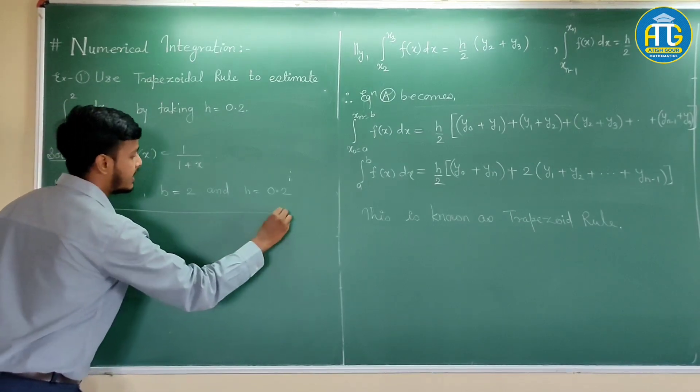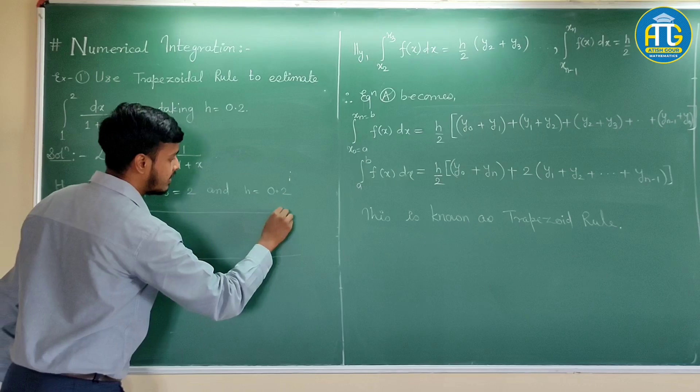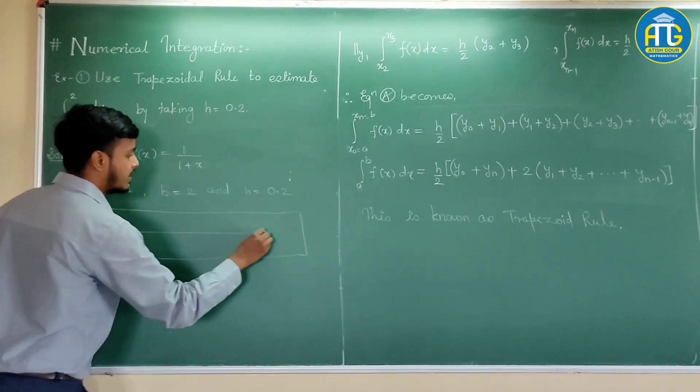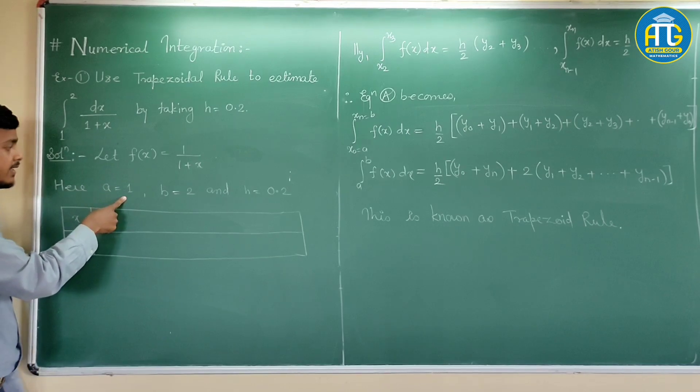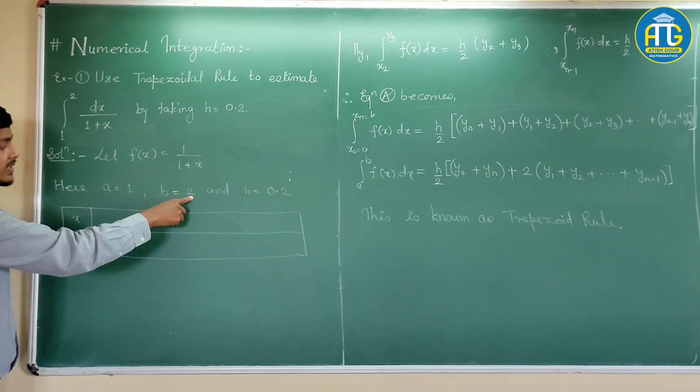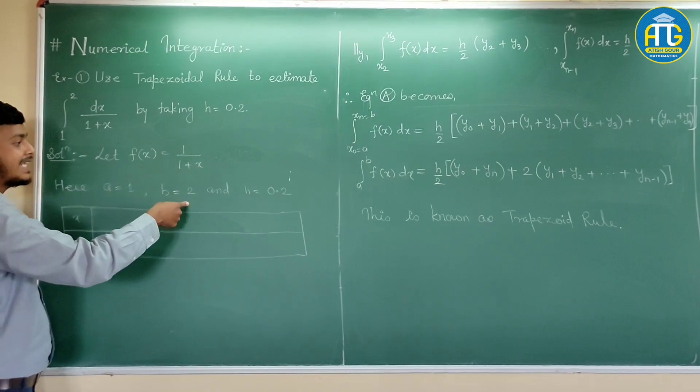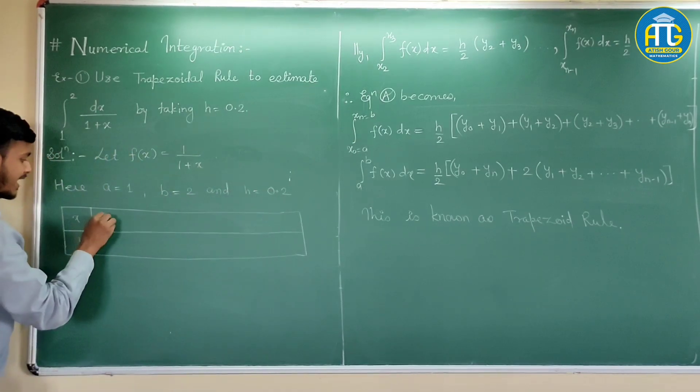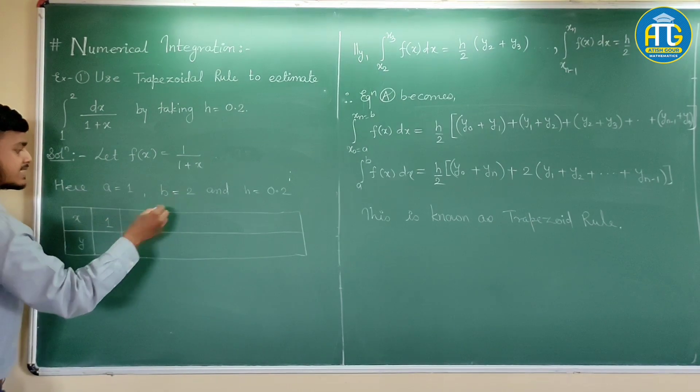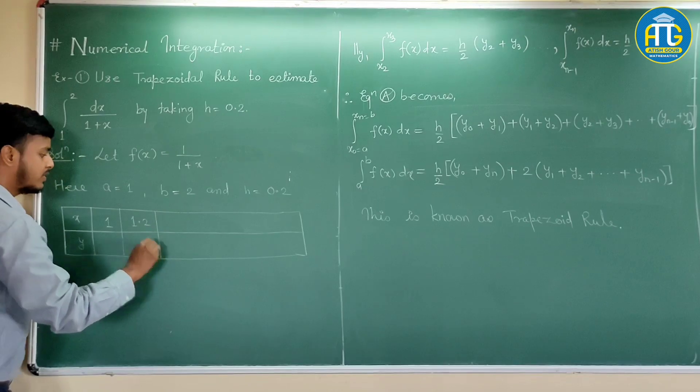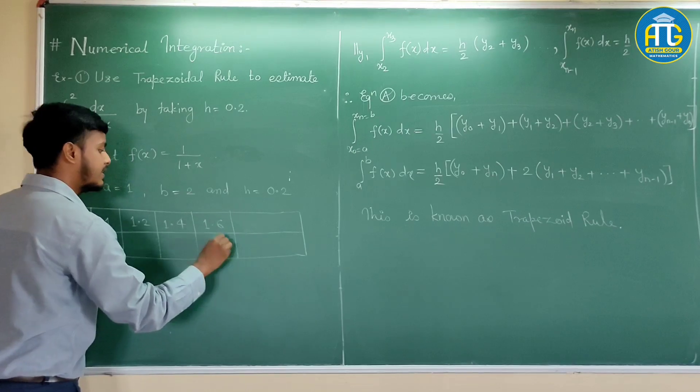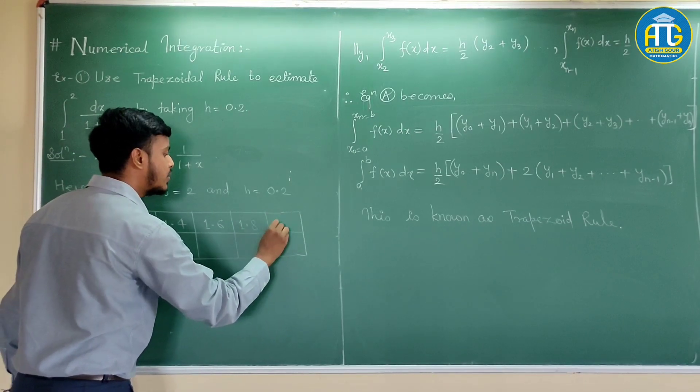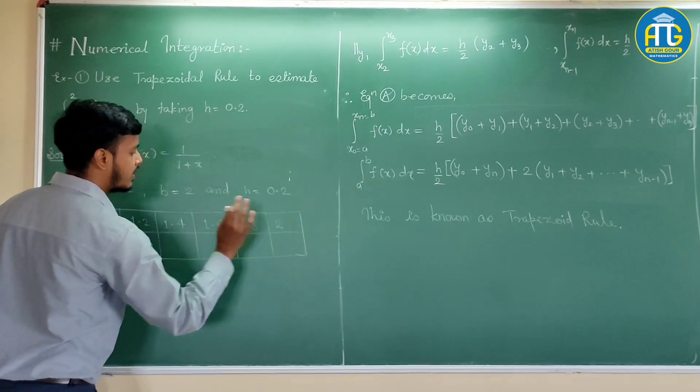So let us first of all draw the table and then only we can go for the numerical computation of the integral. x. Now, as you can see the lower limit is a is equal to 1 and the final limit is 2. We have to go from 1 to 2 by taking a step of 0.2. So, it would be 1.2 and it would be 1.4 then 1.6 then 1.8 and it lasts 2.0 that is 2.